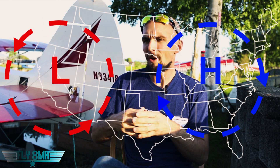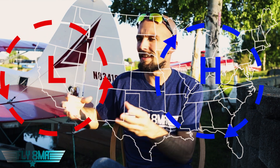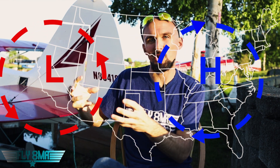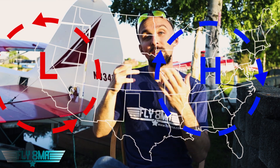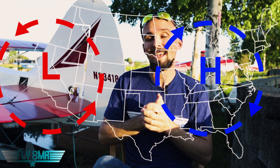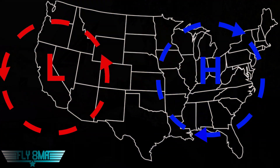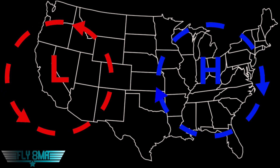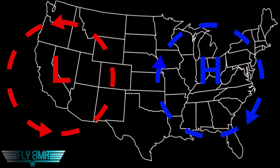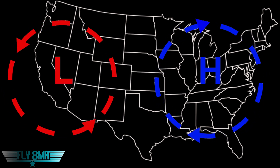High pressures always spin clockwise in the Northern Hemisphere. Think about how much pressure is in the Atlantic Ocean — that's a very high pressure area holding that water. The Atlantic Ocean current spins clockwise as well. So clockwise is the way the Atlantic Ocean turns; counterclockwise is low pressure, how hurricanes turn.